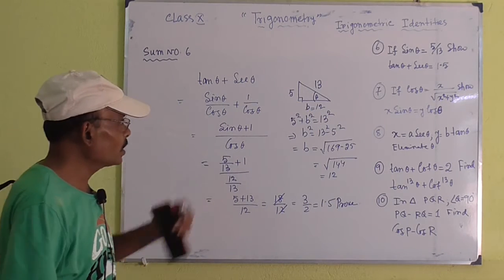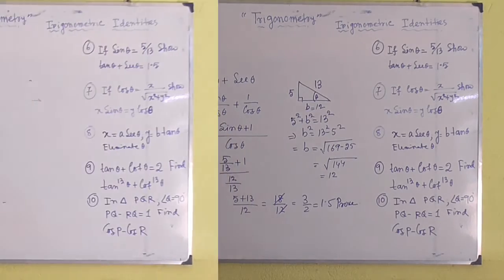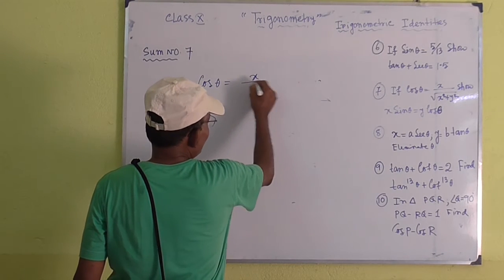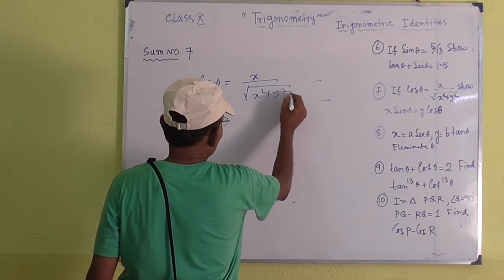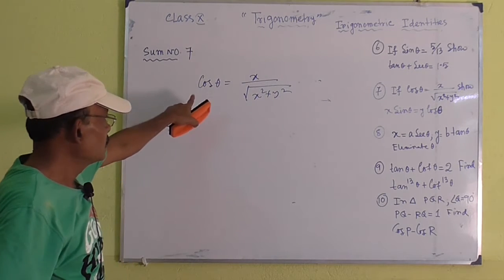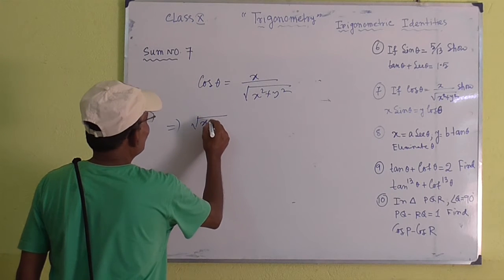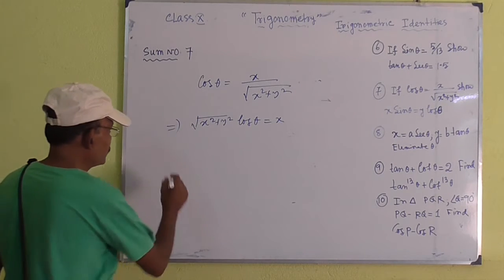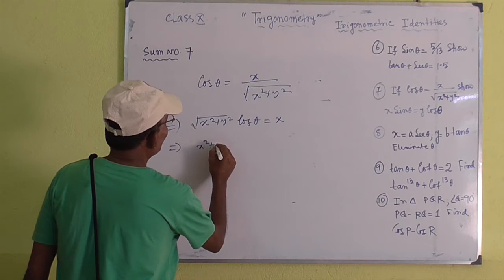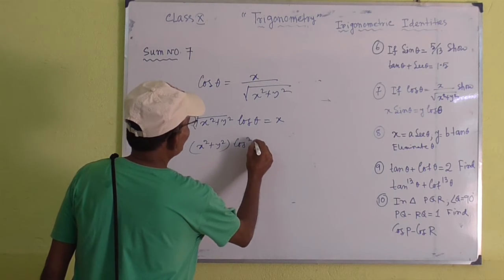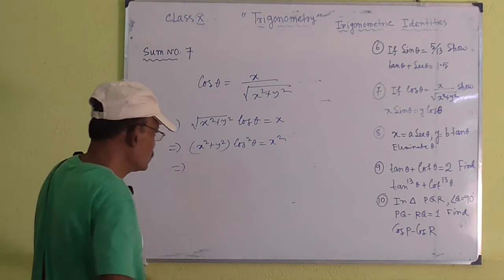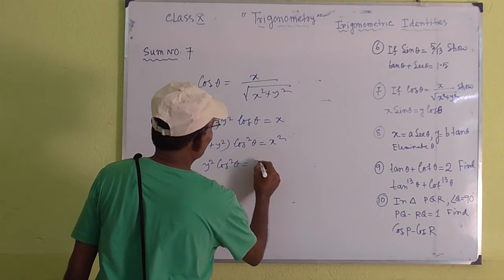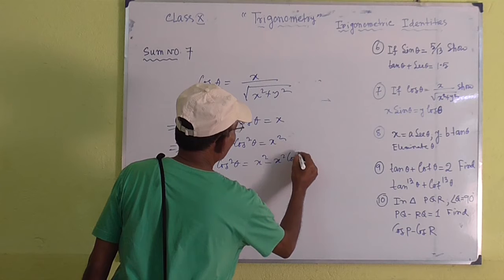Clear? Now I will start question number 7. Here, cos theta equals x by root over x square plus y square. Now, by cross multiplication, root over x square plus y square cos theta equals x. Now squaring both sides, x square plus y square cos square theta equals x square. Simplifying, we have y square cos square theta equals x square minus x square cos square theta.